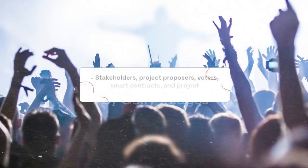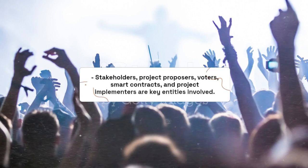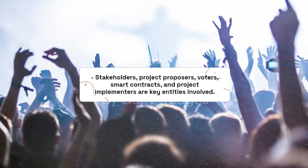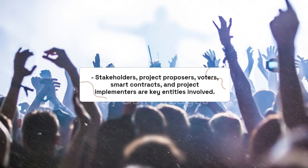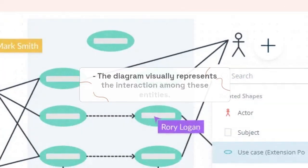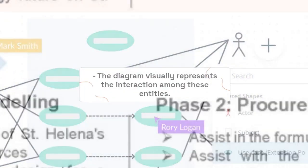Stakeholders, project proposers, voters, smart contracts, and project implementers are the key entities involved. The diagram visually represents the interaction among these entities.